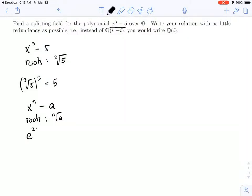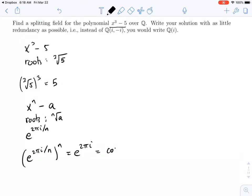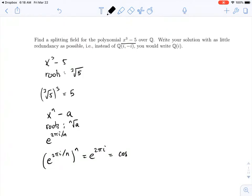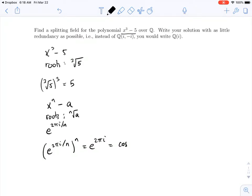So, we're going to take e to the 2 pi i over n. We know that's an nth root, because if you take e to the 2 pi i over n and raise it to the nth power, you get e to the 2 pi i, which is equal to 1. If you don't see that, you have to go back to the cosine formula, for example, cosine and sine.